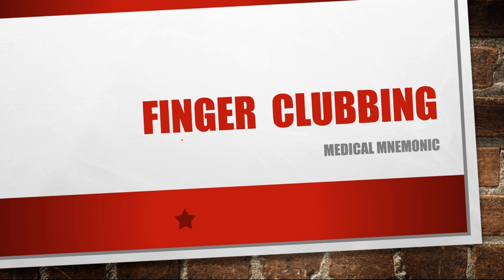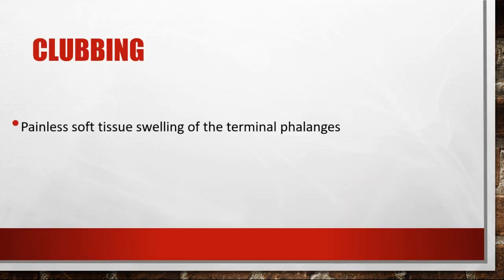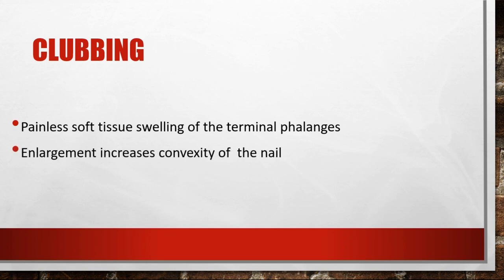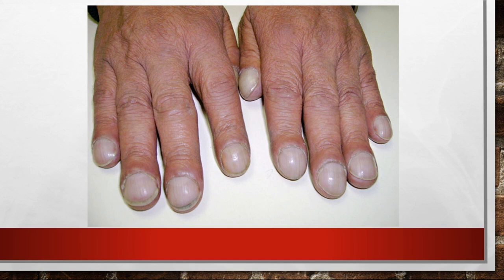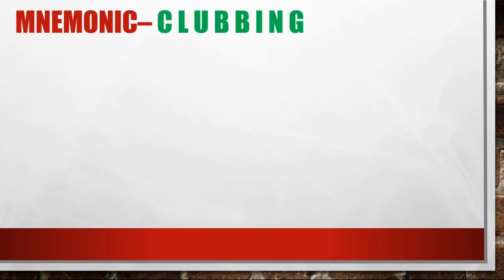Today we're going to talk about finger clubbing. Clubbing is the painless soft tissue swelling of the terminal phalanges, and this swelling increases the convexity of the nail. As you can appreciate in this picture, the nail is very convex and there is increase in the soft tissue as they are swollen. In this picture also you can appreciate the clubbing of the nails.